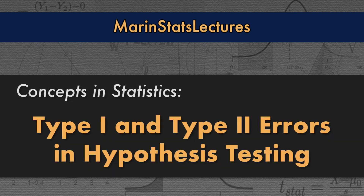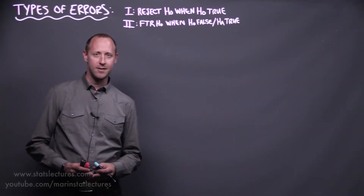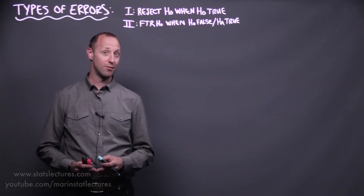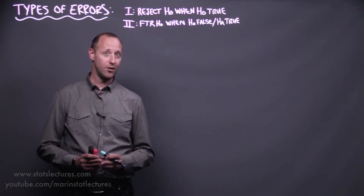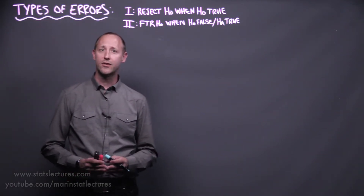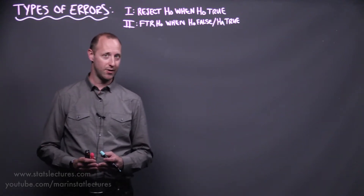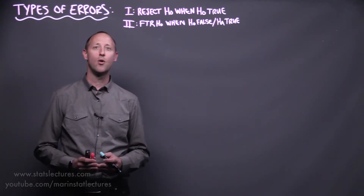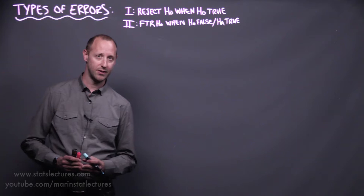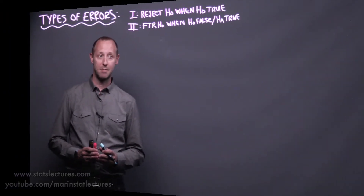In this video, we're going to talk about errors that could be made when testing a hypothesis. When testing a hypothesis, in the end we're going to decide to either reject our null or fail to reject our null. In either case, we may be wrong. We'll never know if we actually made an error, but we can know how likely we are to make certain types of errors. So let's talk about the types of errors that might be made.